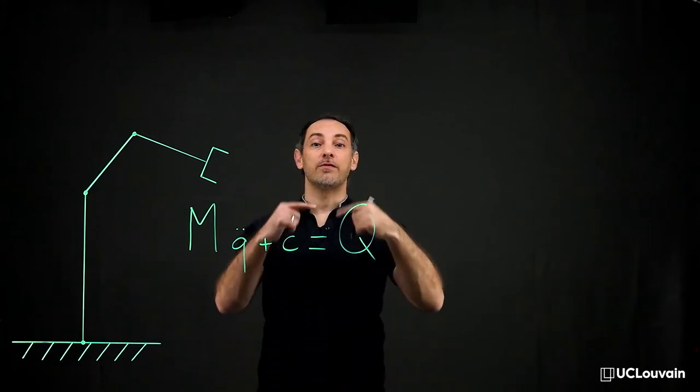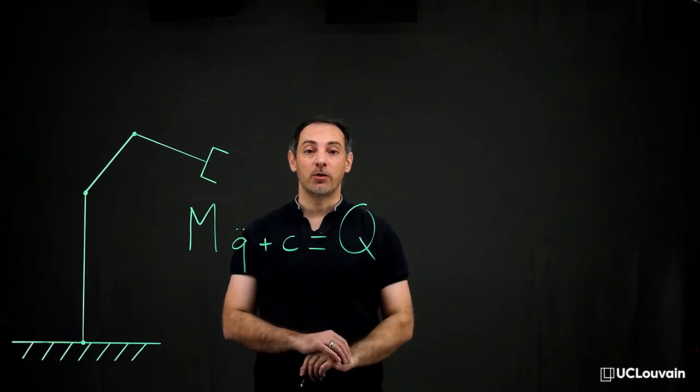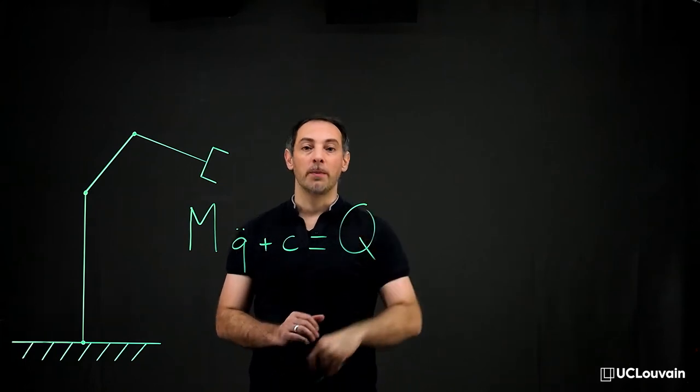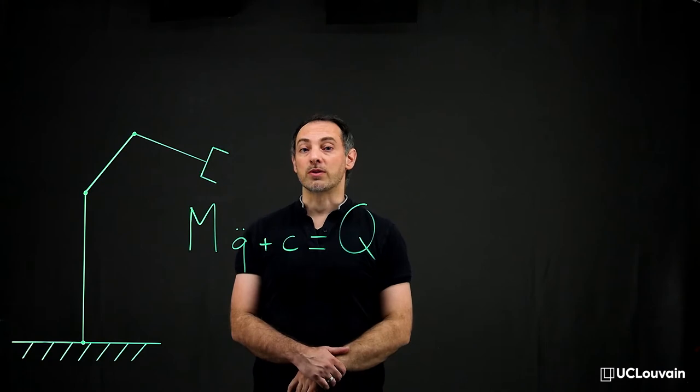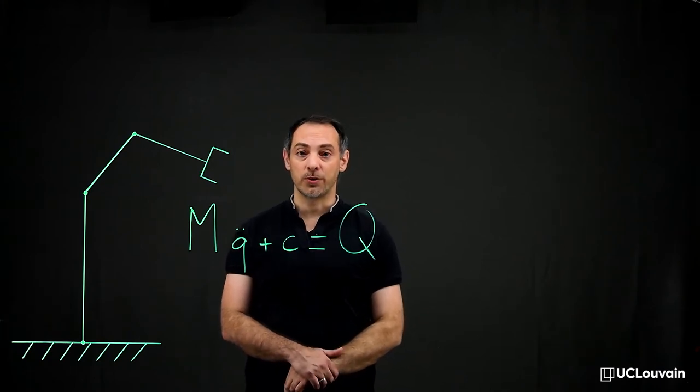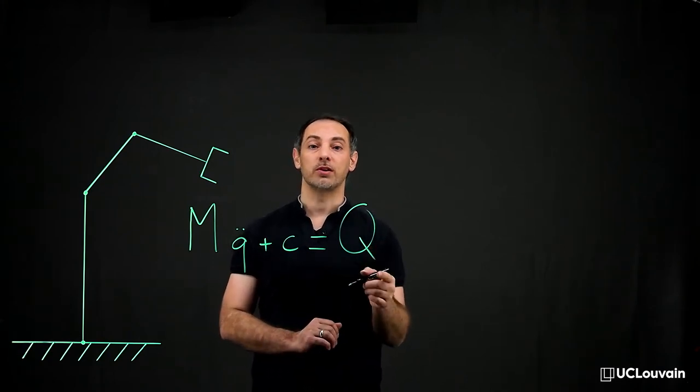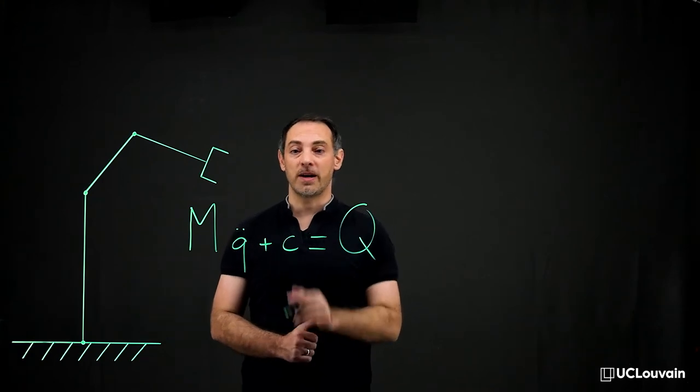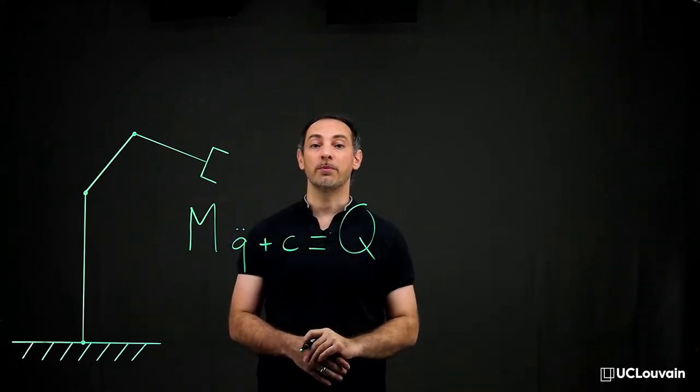For the inverse dynamics, these generalized joint forces Q become the problem unknowns given a joint trajectory q, q̇, q̈. In this case, the mass matrix M is not useful anymore.